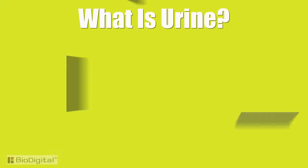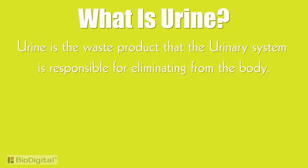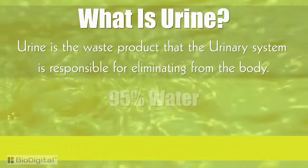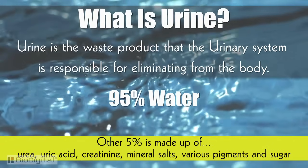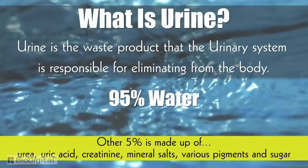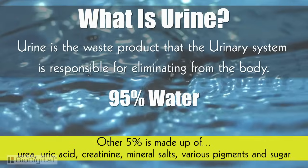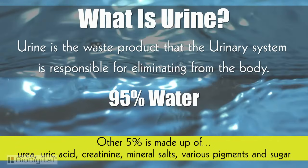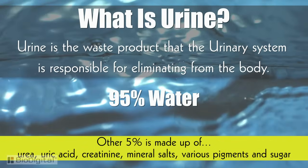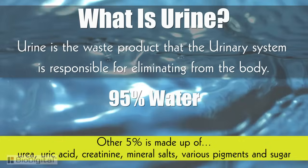So what exactly is urine? Urine is the waste product that the urinary system is responsible for eliminating from the body. It is 95 percent water, and the other 5 percent is made up of urea, uric acid, creatinine, mineral salts, various pigments, and sugar.